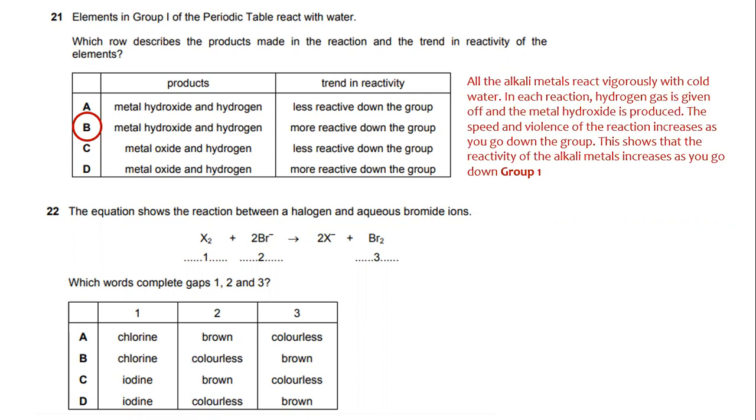So the answer for question 21 will be, in terms of the product, metal hydroxide and hydrogen, and trend in reactivity, more reactive down the group.